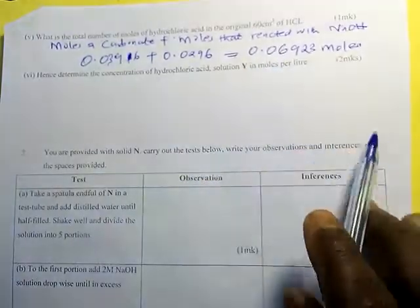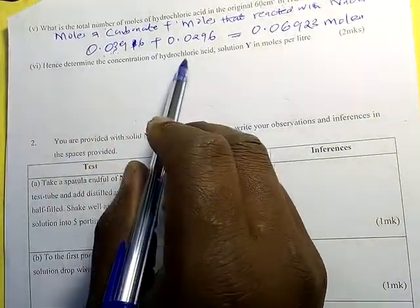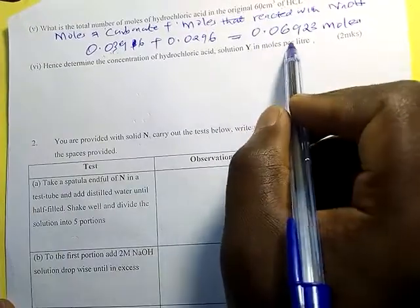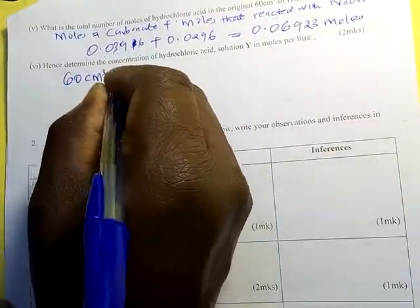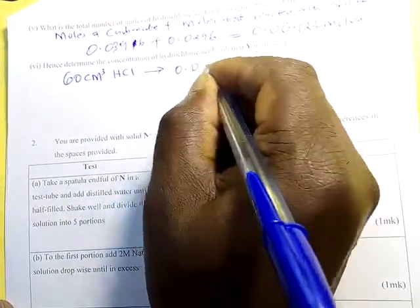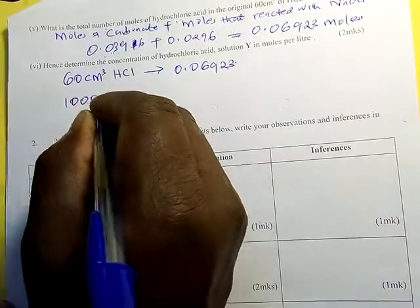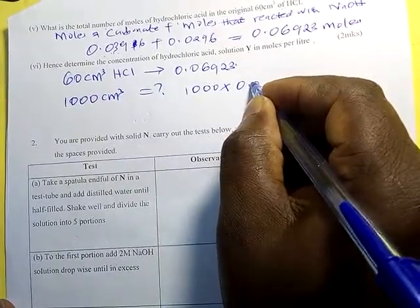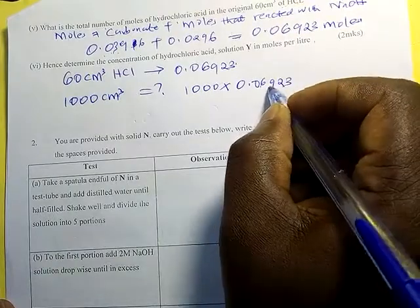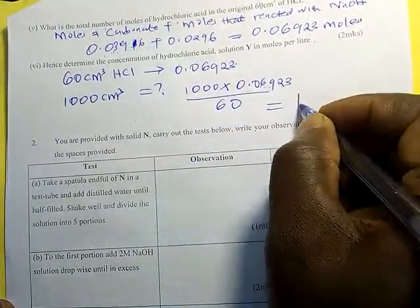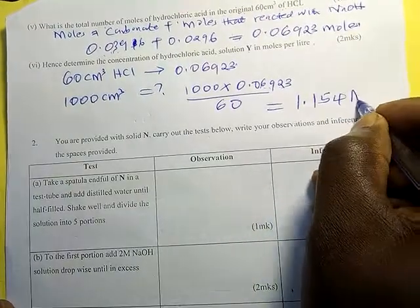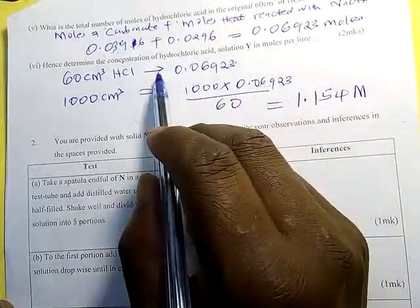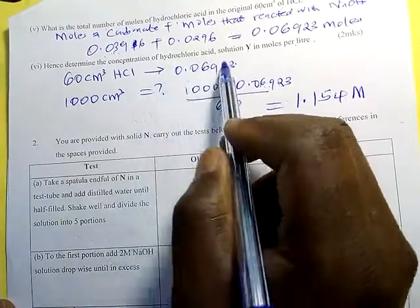Finally, determine the concentration of hydrochloric acid Y in moles per liter. We have 0.0692 moles in 60 cm³. Scaling to 1000 cm³: concentration = 1000 × 0.0692 ÷ 60 = 1.154 mol/L. Concentration in moles per liter means molarity — the number of moles in one liter.